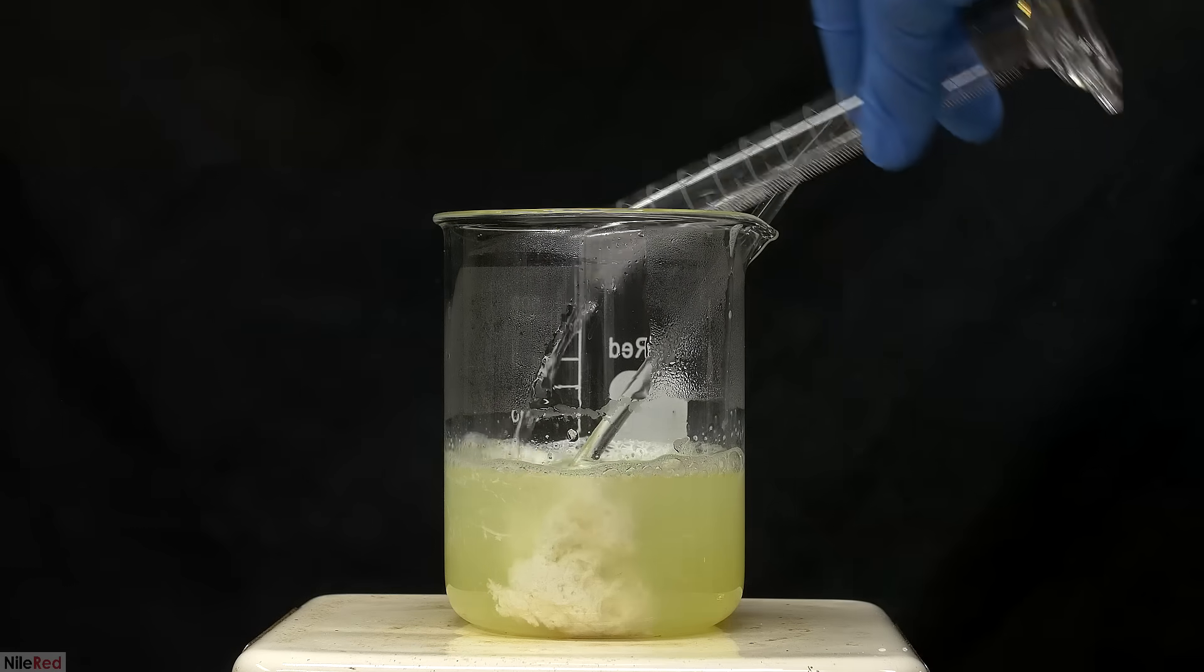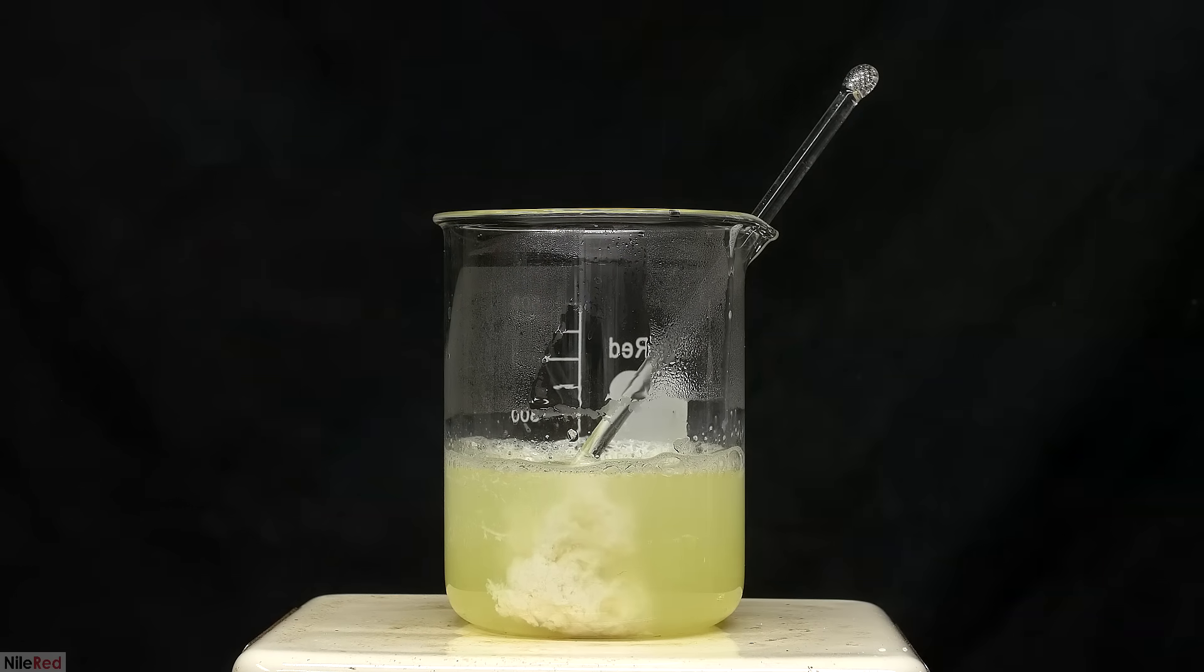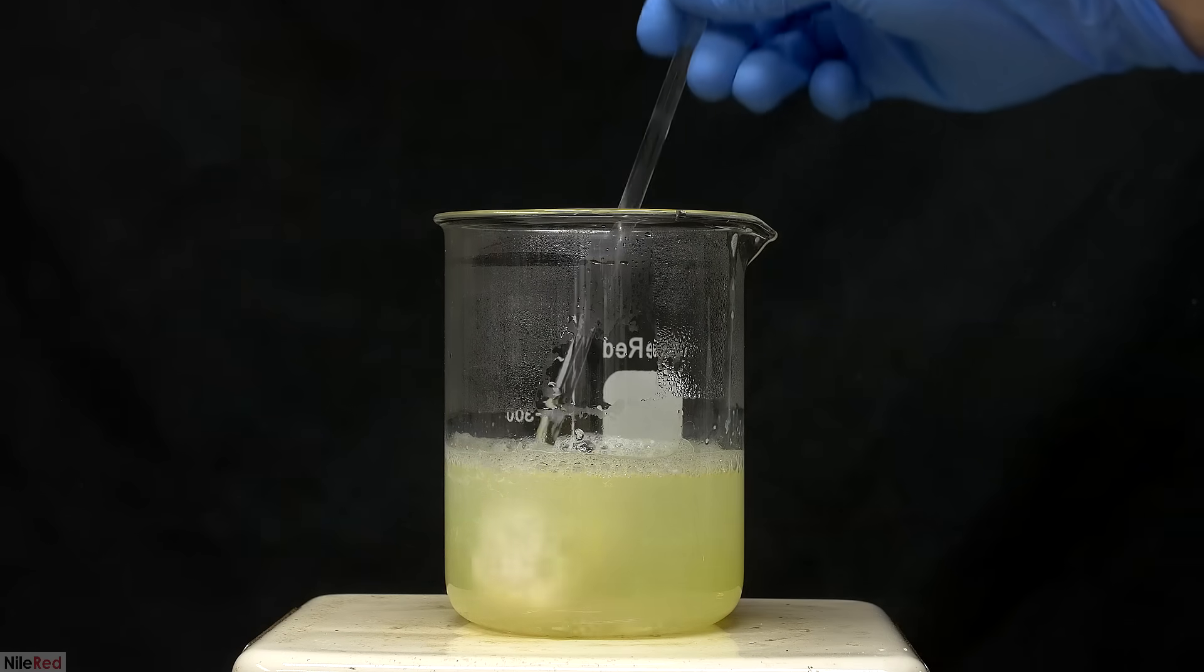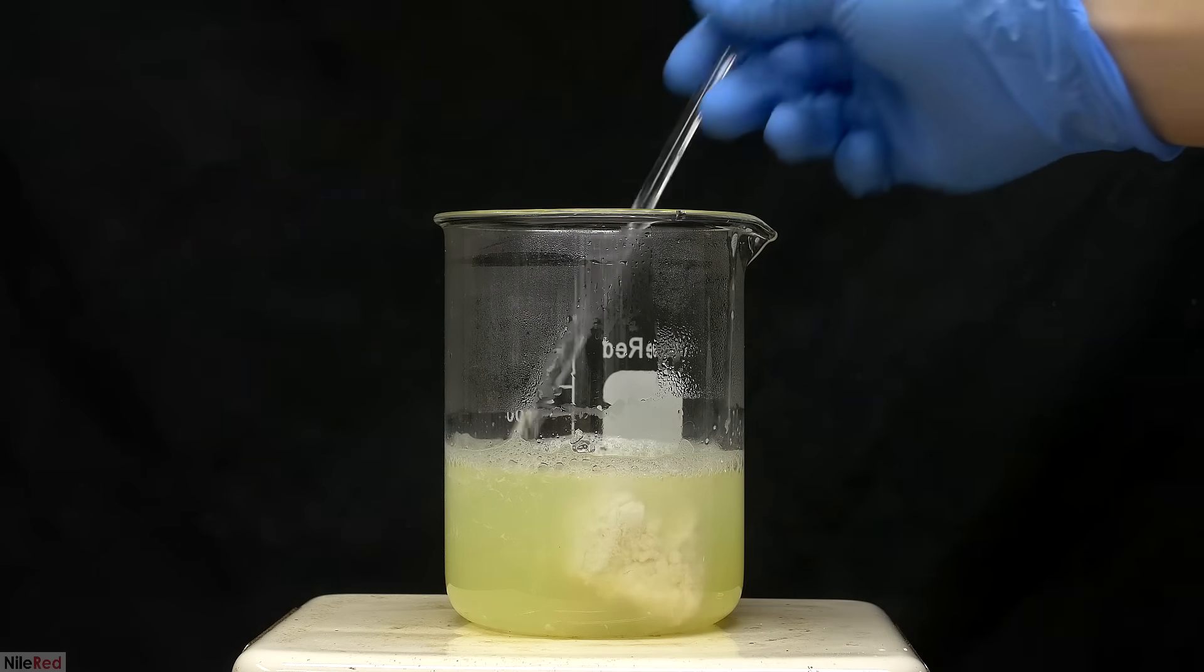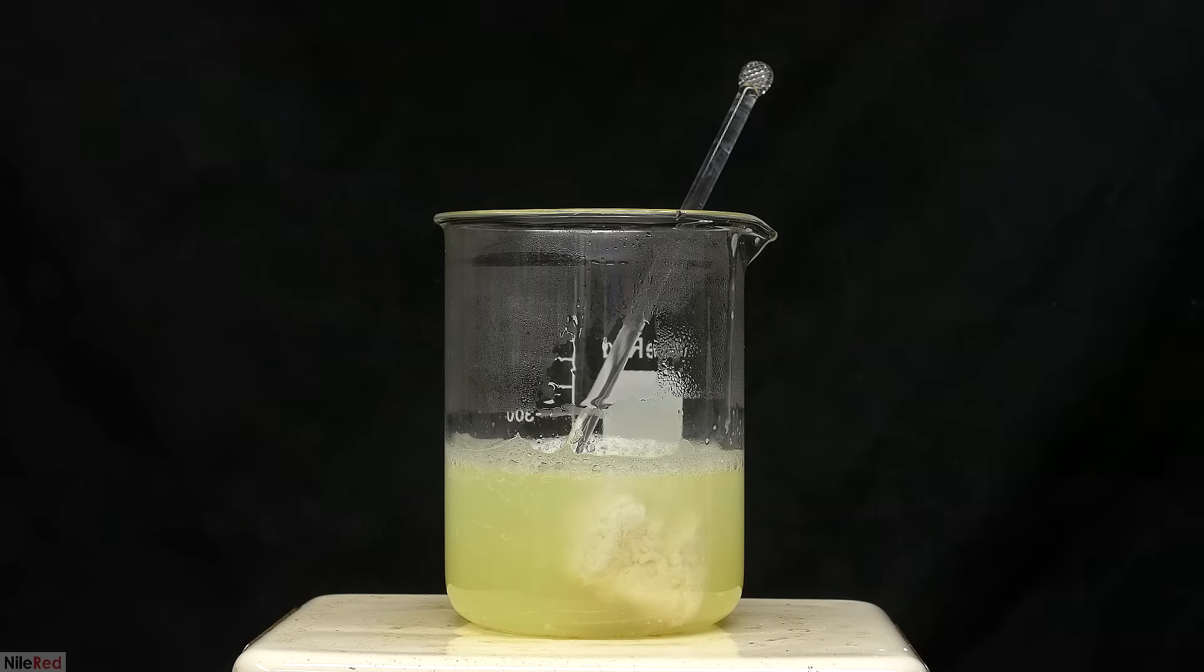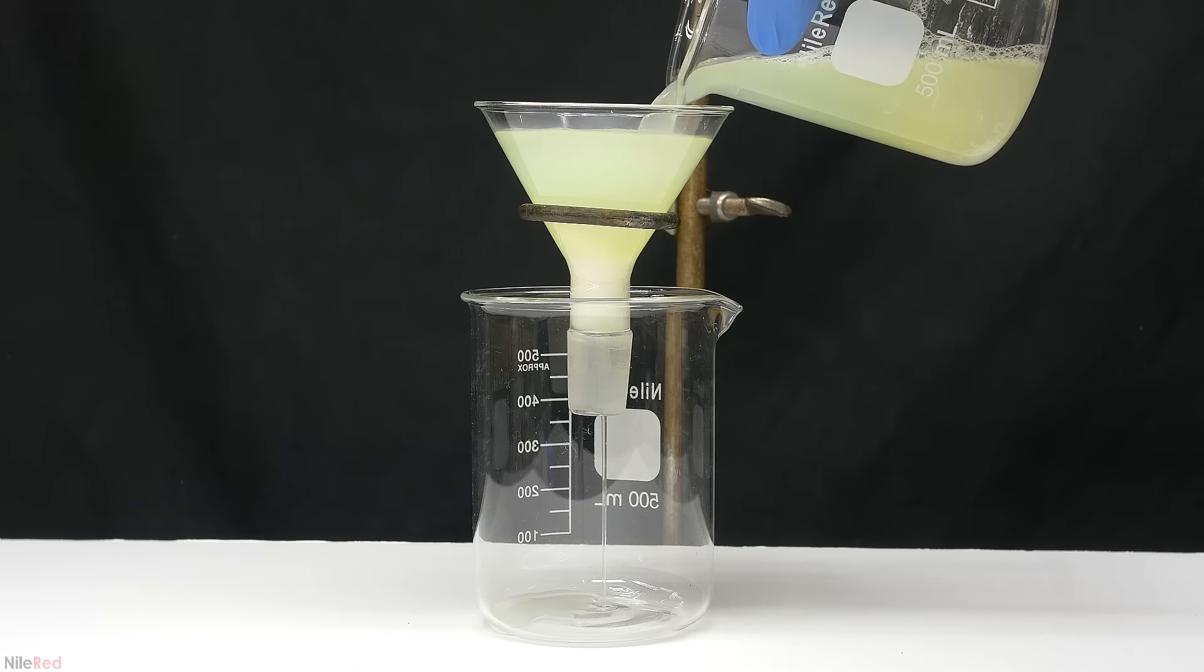The last little bit of acetic acid is added, but it doesn't really do too much, because at this point, pretty much all of the casein has already precipitated. I continue to stir things for a little bit, and you can see that most of it has clumped up into this large ball. To separate it from the liquid, I filter it through a little bit of cotton.